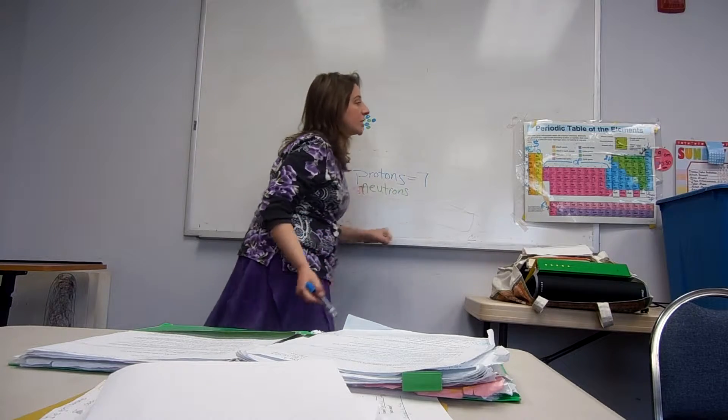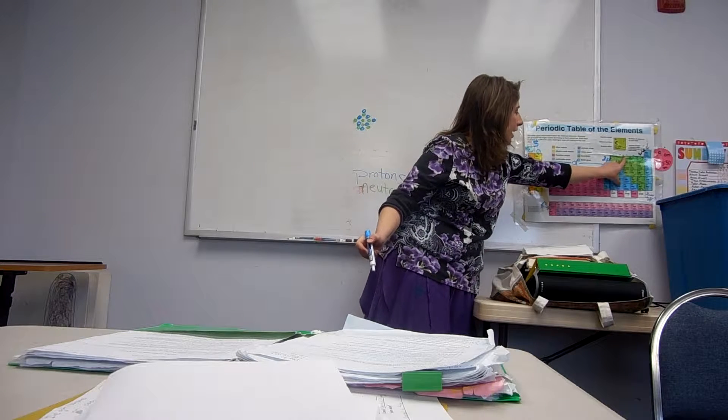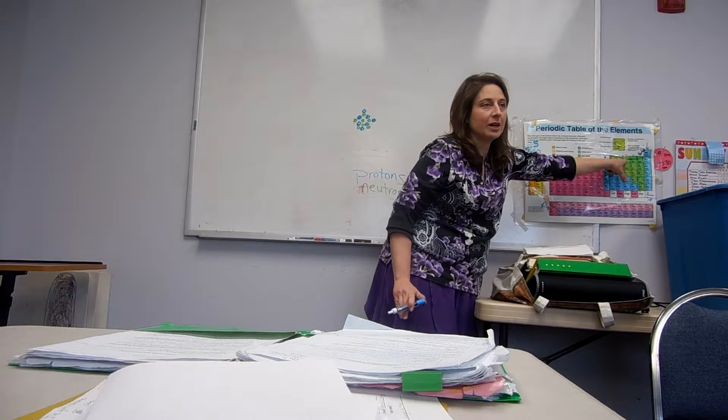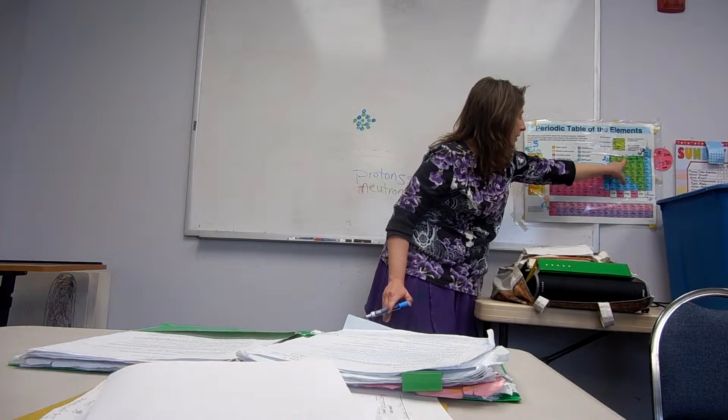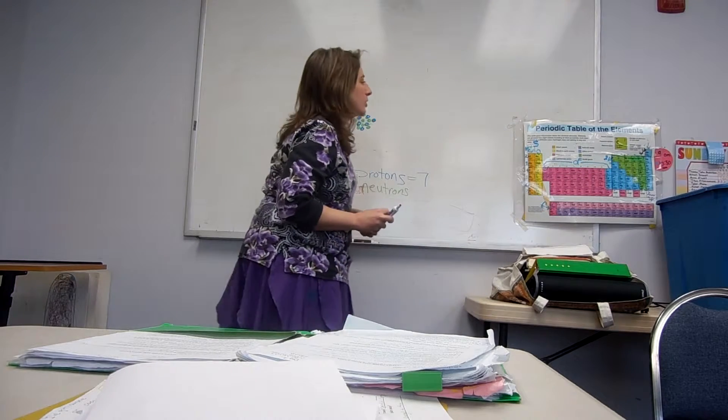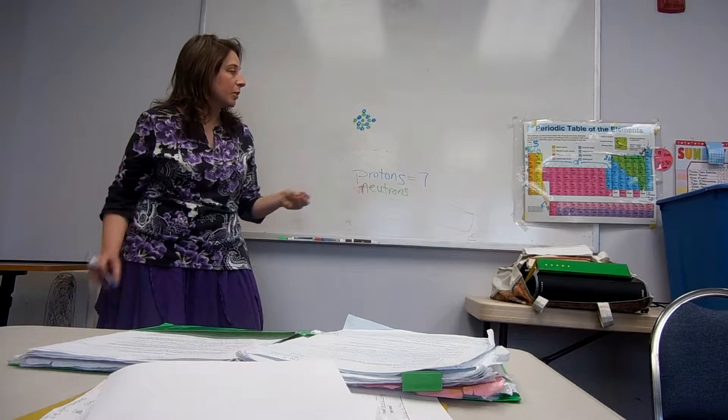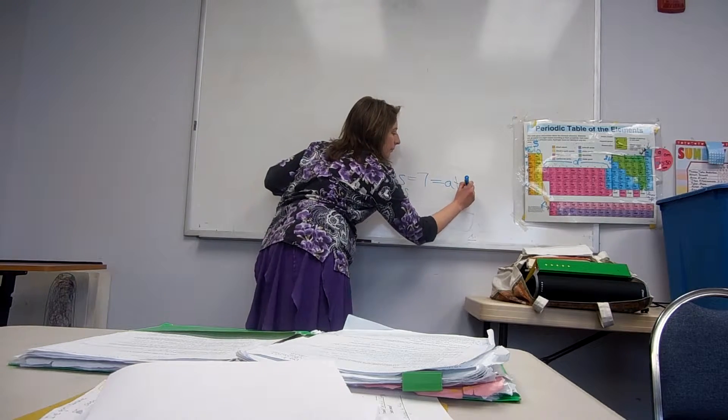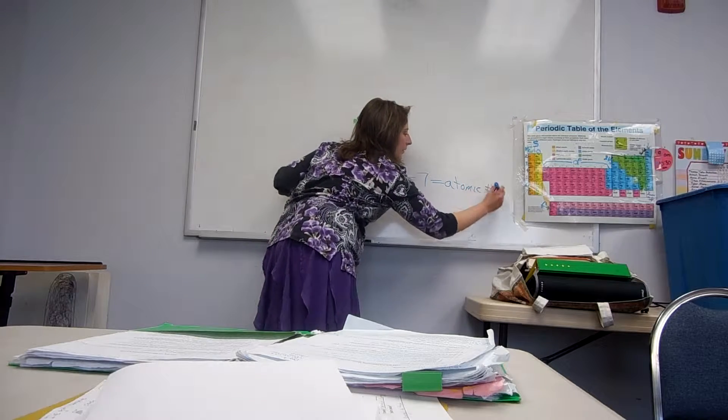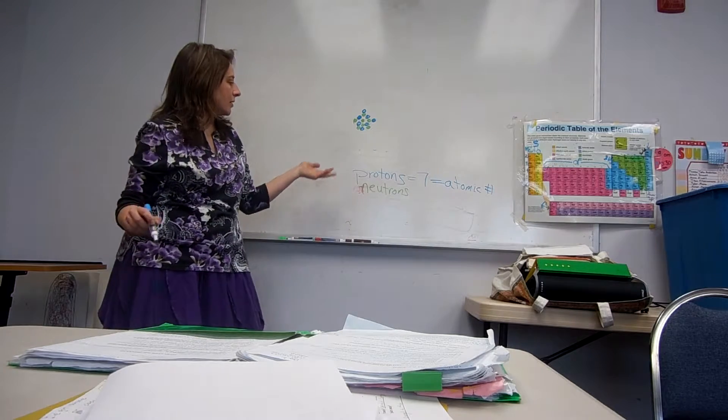So, how did you figure out this is nitrogen? Okay, if it has seven protons, and you just look at this number, which is called what? Atomic number. Atomic number. The atomic number here, seven, and you see that anything with seven protons, right? The seven is going to be nitrogen.